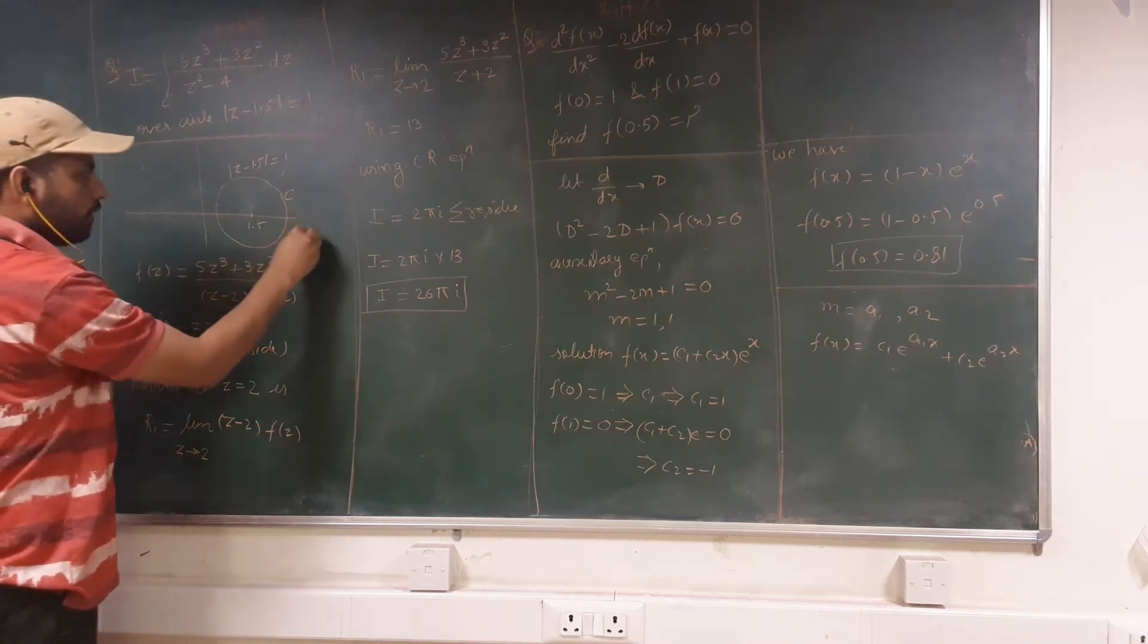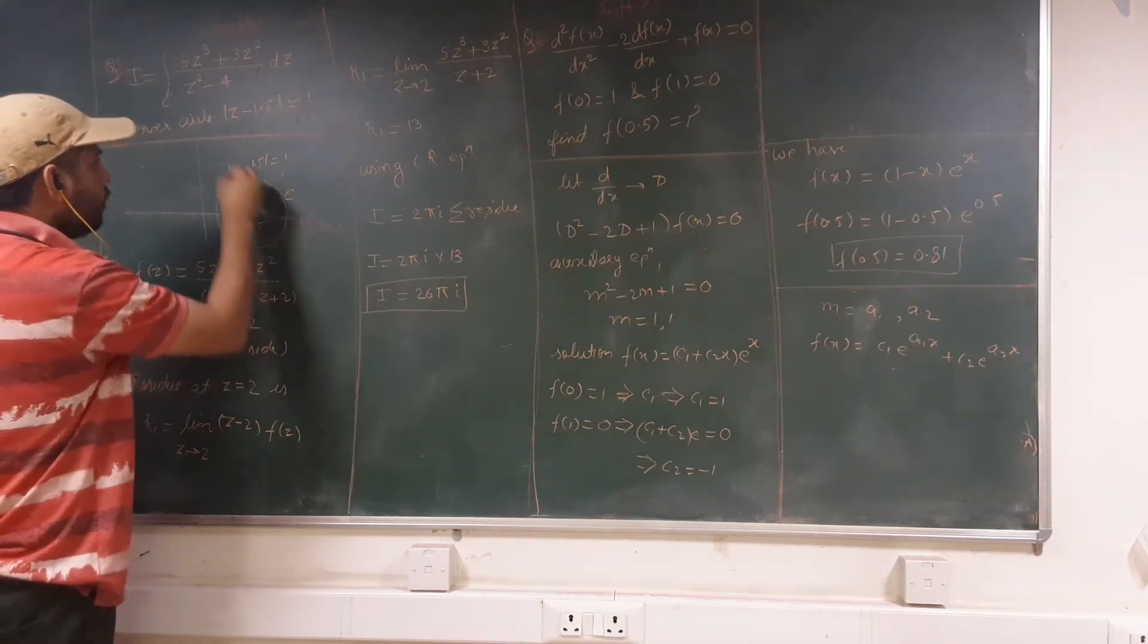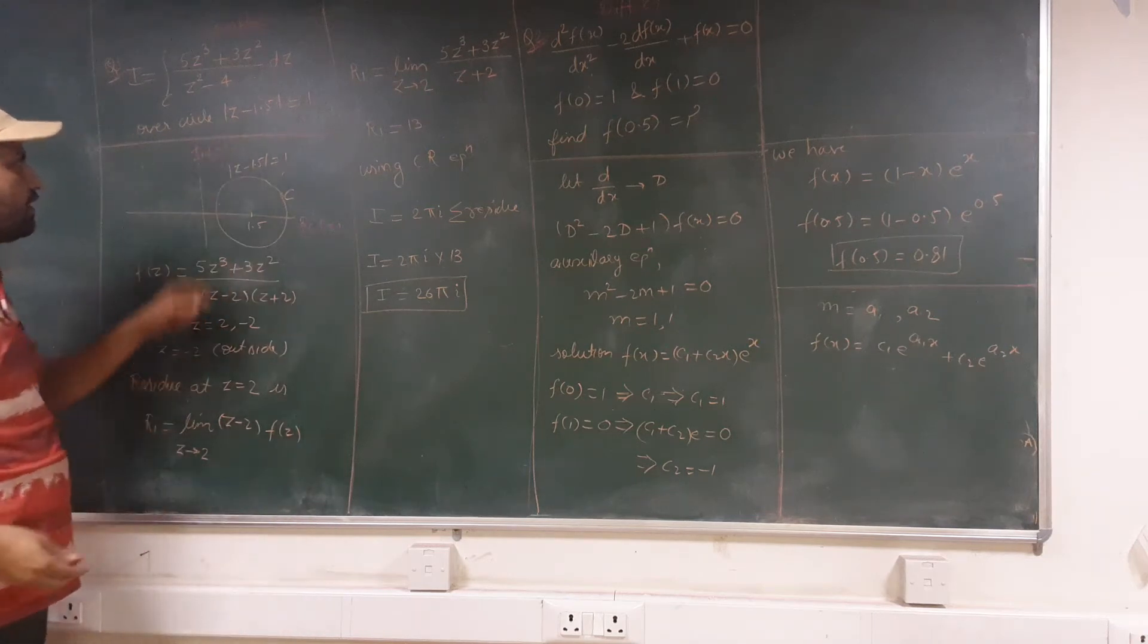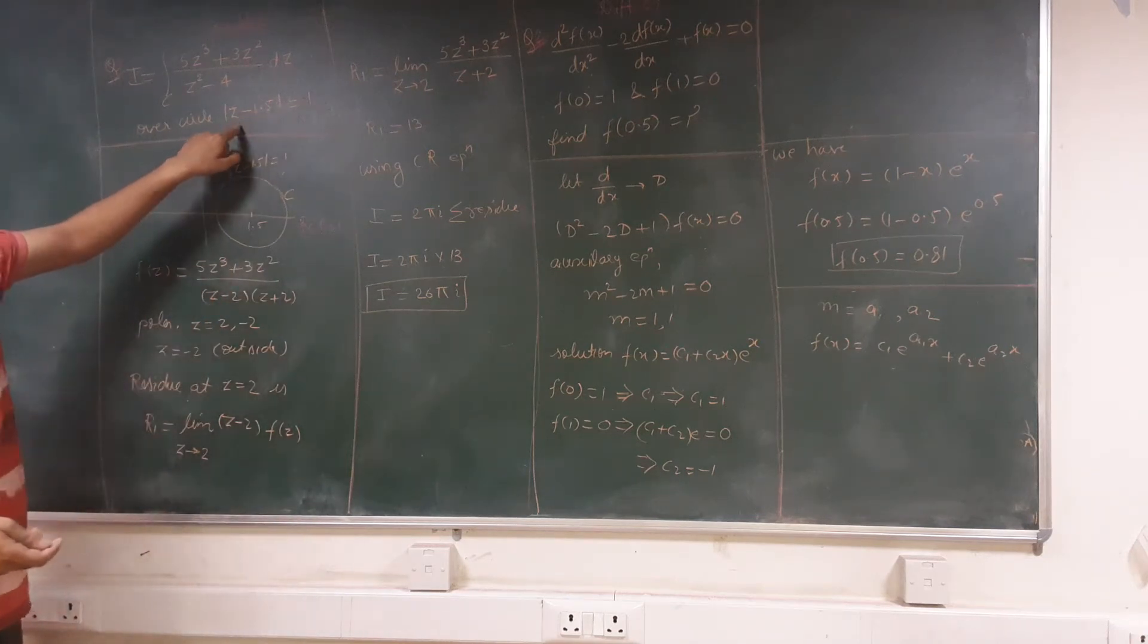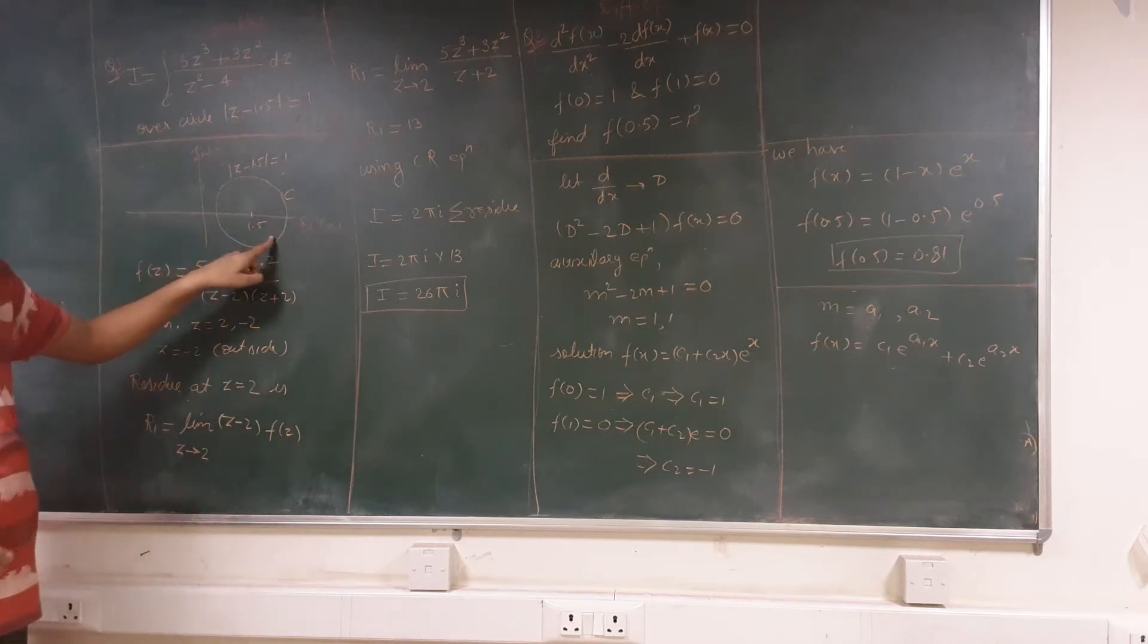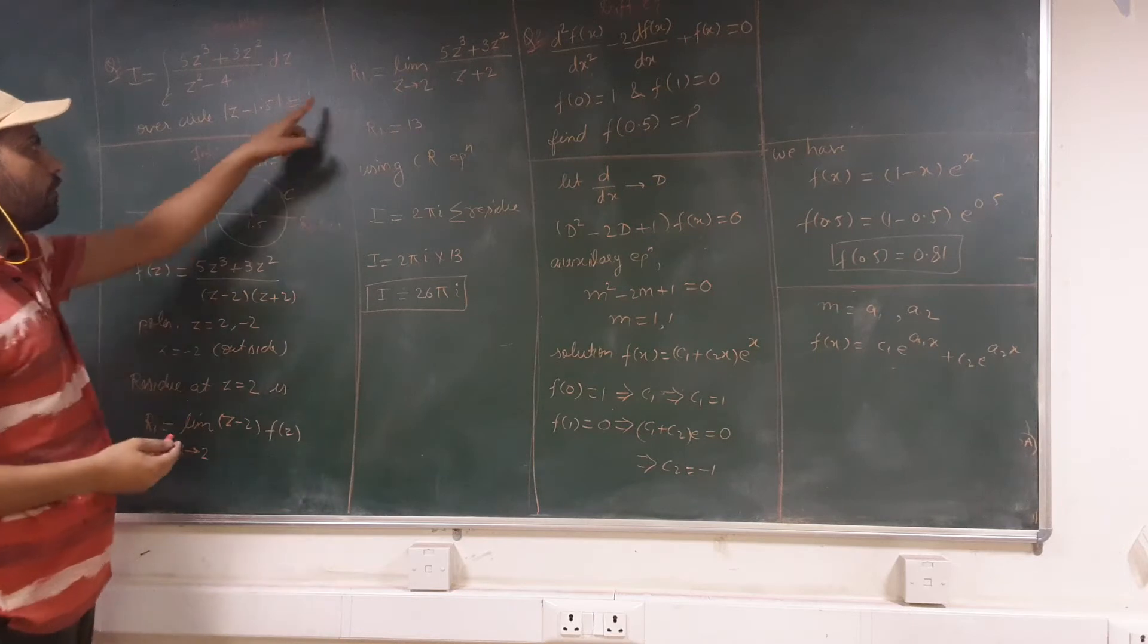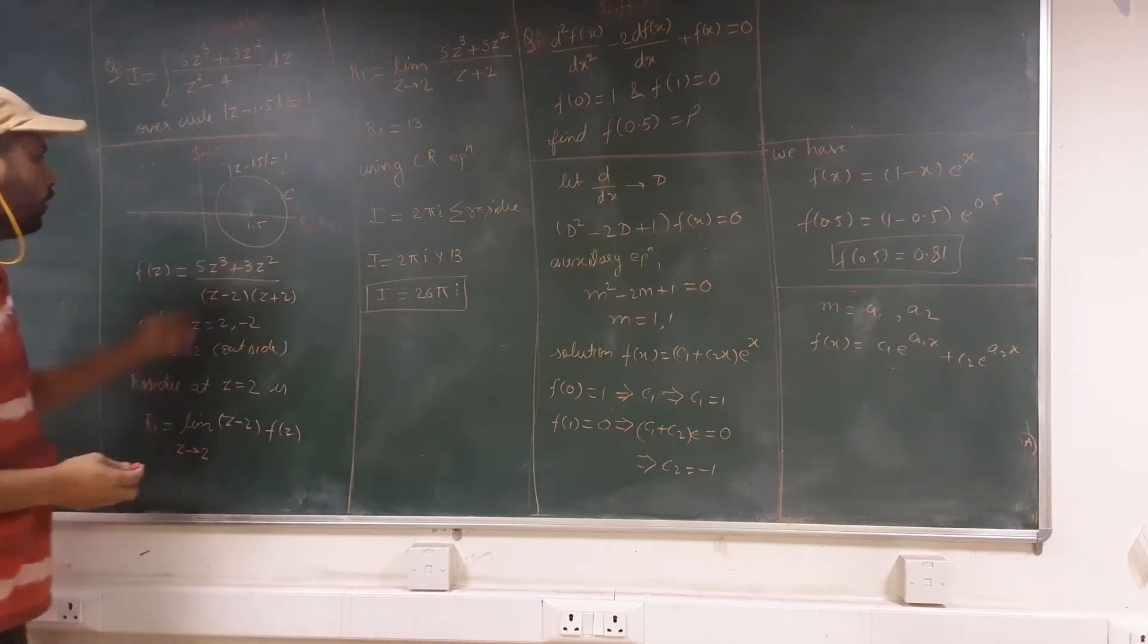So this is the complex plane. Here we are having real part of z and this is the imaginary part of z. We can see that this circle has a center at z = 1.5. So this is the center and the radius of this circle is 1 as given here. So this is the circle.